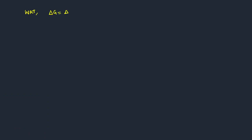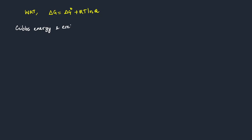From thermodynamics, we know that one equation is: ΔG = ΔG° + RT·lnQ. So we learned thermodynamics — in this equation we need to substitute values. ΔG is the Gibbs free energy. We need to substitute the Gibbs free energy: ΔG = -nFE_cell. We need to substitute this into the thermodynamic equation of the cell reaction.